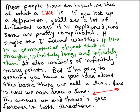Most people have an intuitive idea of what a line is, but if you look up a definition you'll see a lot of different ways it is explained, and some are pretty complicated. Here's one I found online: a line is a geometrical object that is straight, infinitely long, and infinitely thin. It also consists of infinitely many points, but I'm going to assume you already know what a line is.